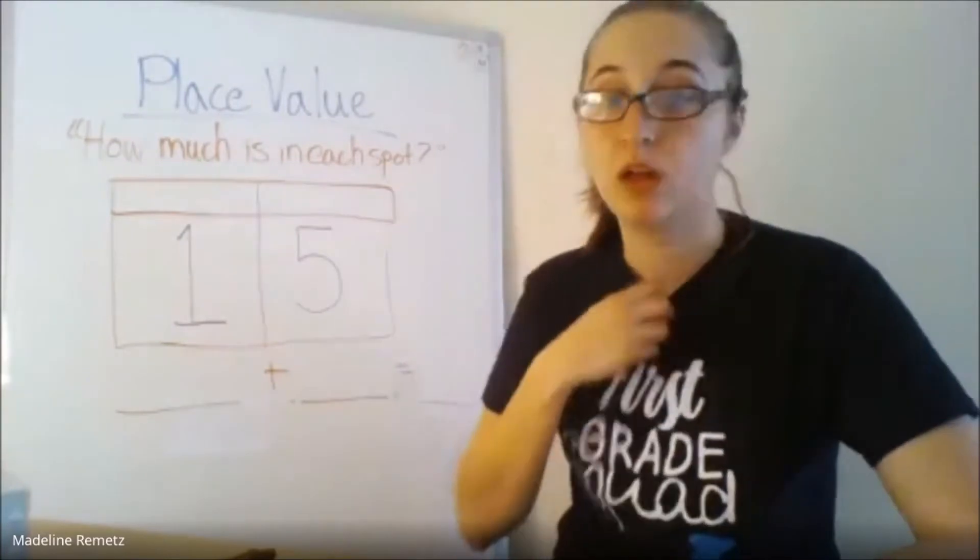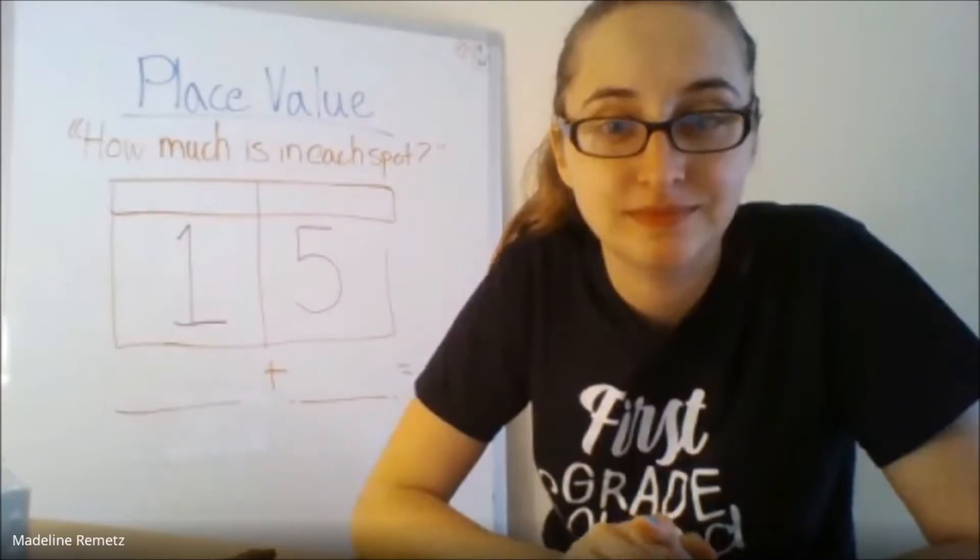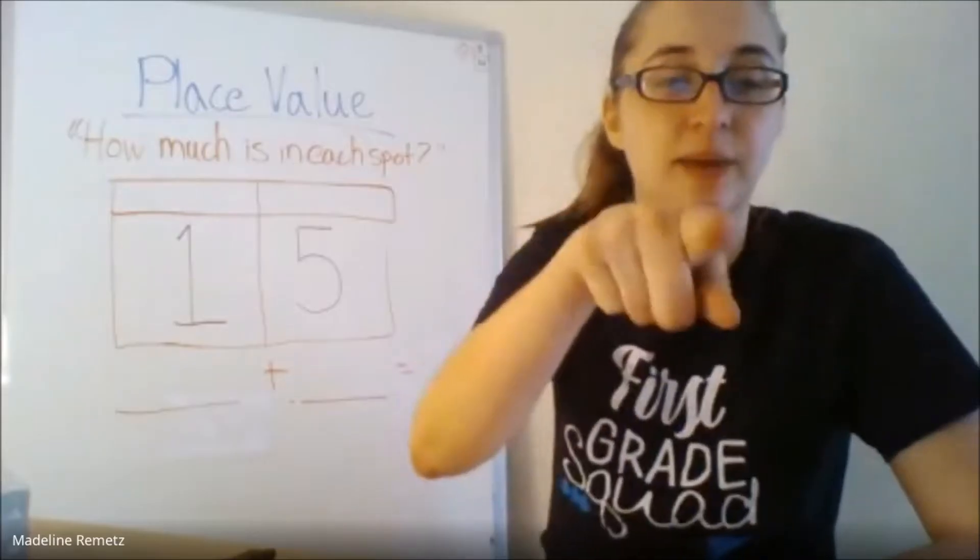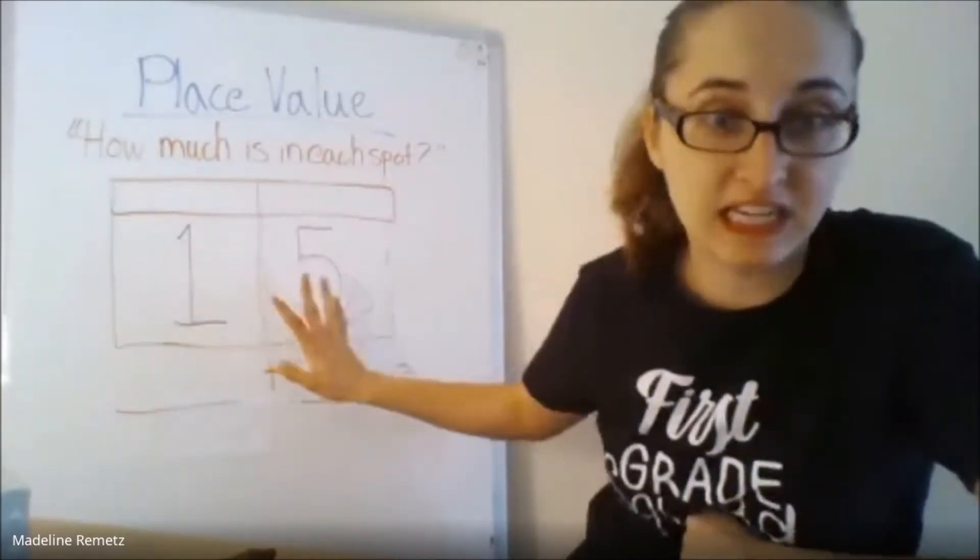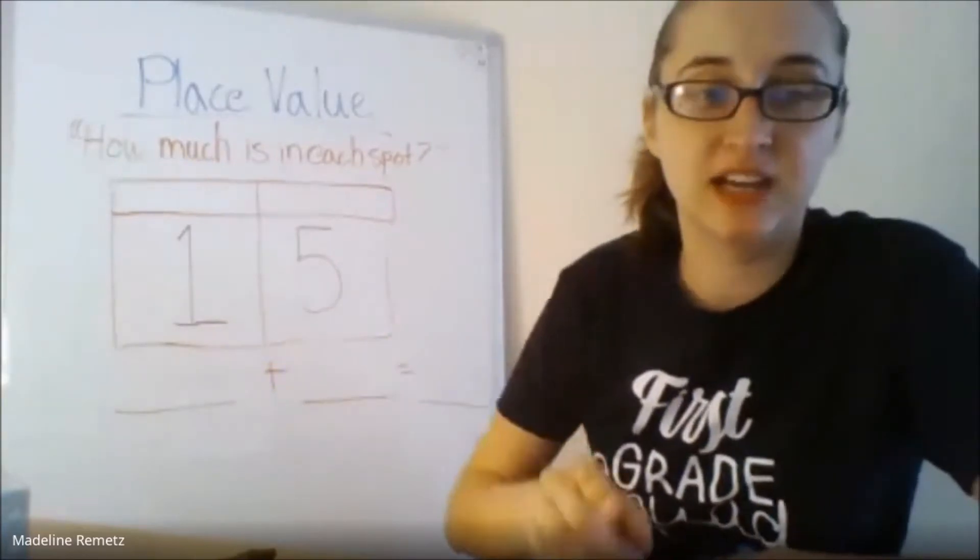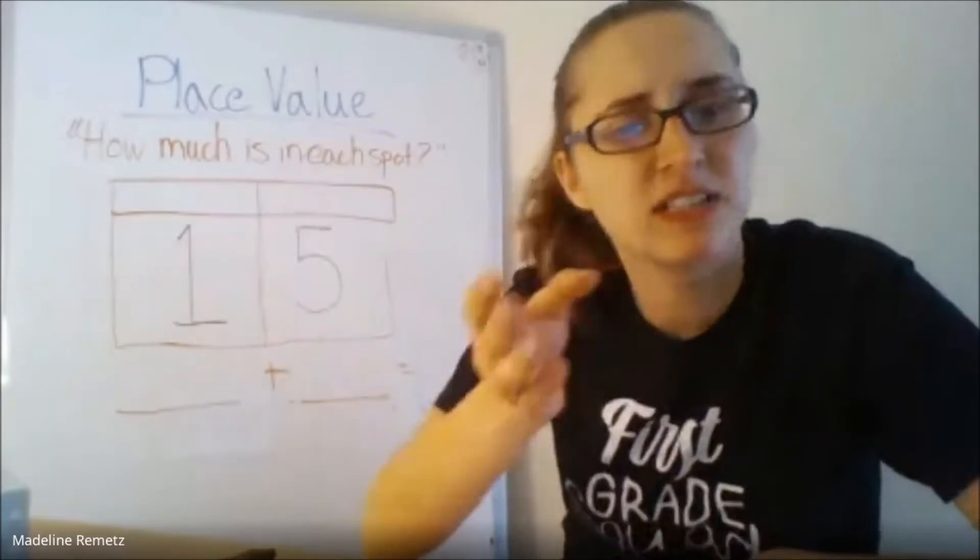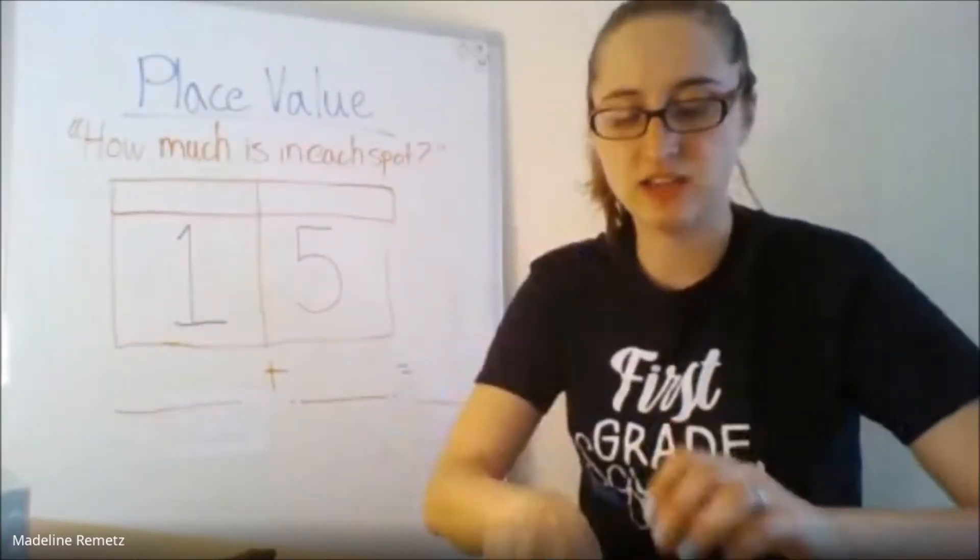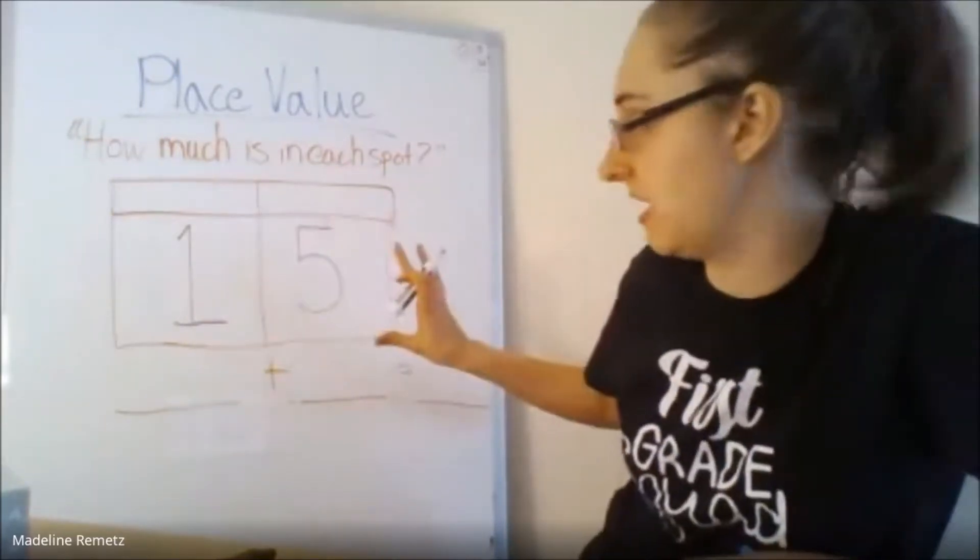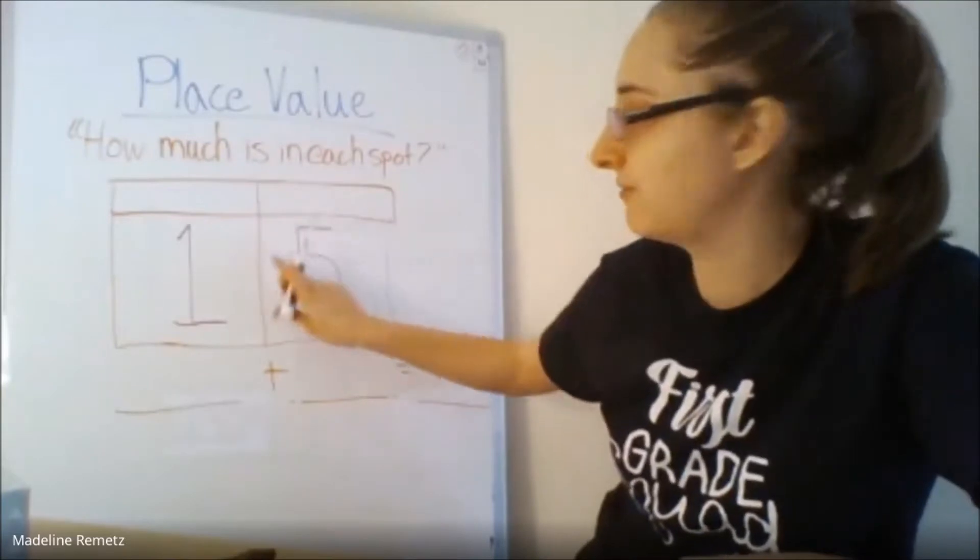For example, if you had the number 1-5, what does 1-5 make? I wrote it in that order specifically. Yes, Allison? Fifteen. Yeah, and Allison, I'm going to have you stay unmuted for a minute. So Allison said 15, but Allison, can you tell me the different parts of this number? I wrote them in this square for a reason. What does this 5 represent?